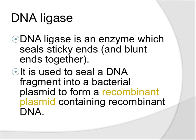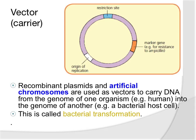Once we've opened our chromosome and got our gene out, and we've cut open our plasmid, we use DNA ligase. It's an enzyme that seals sticky ends and blunt ends, and it's used to seal the DNA fragment - the gene you want - into the bacterial plasmid to form a recombinant plasmid. The vector is the carrier that carries the DNA from the genome of one organism to the genome of another, and can be either a plasmid or an artificial chromosome.